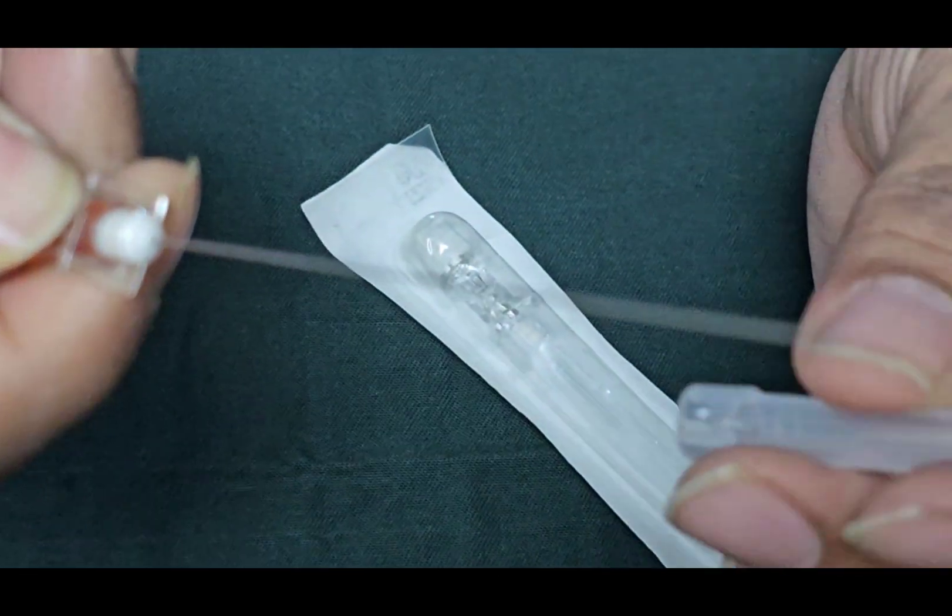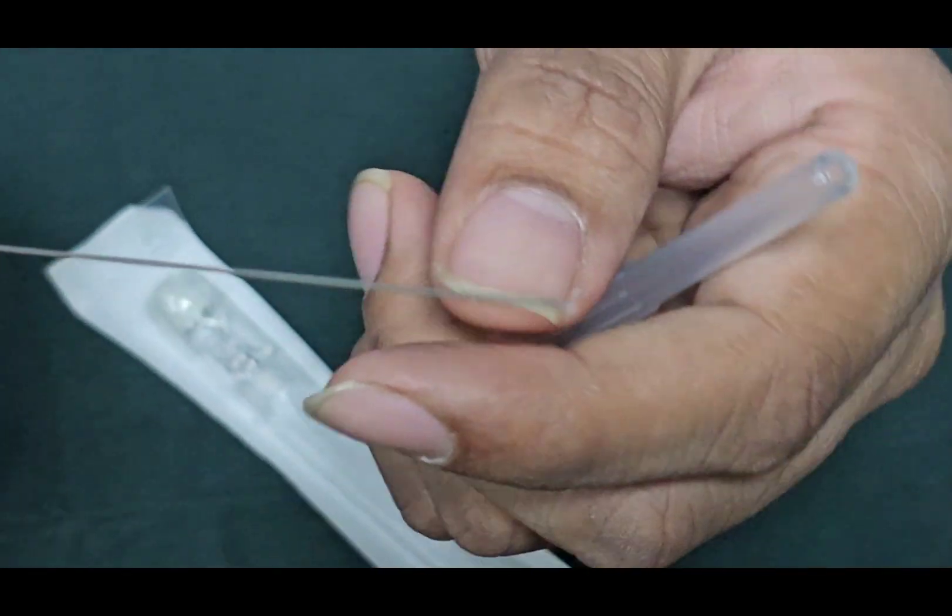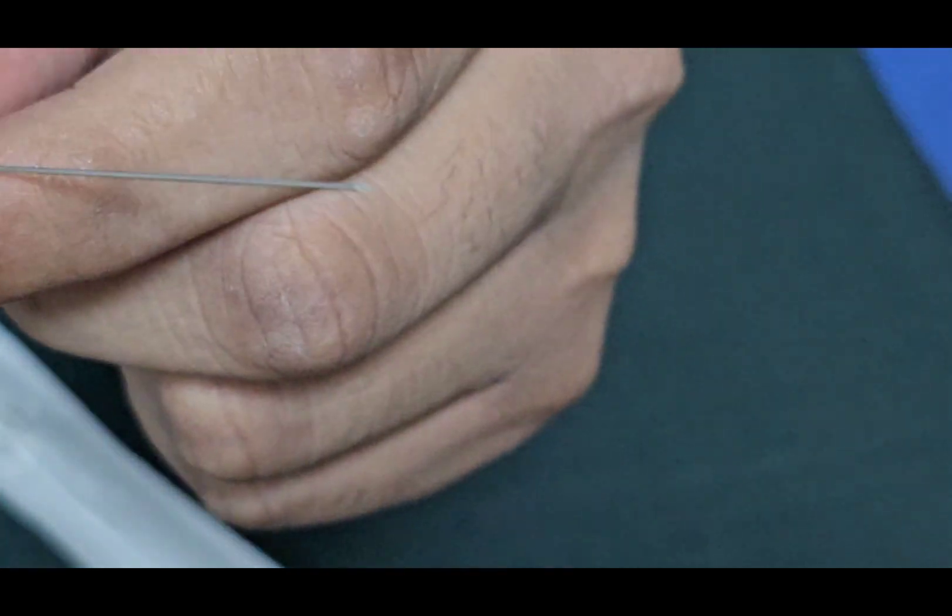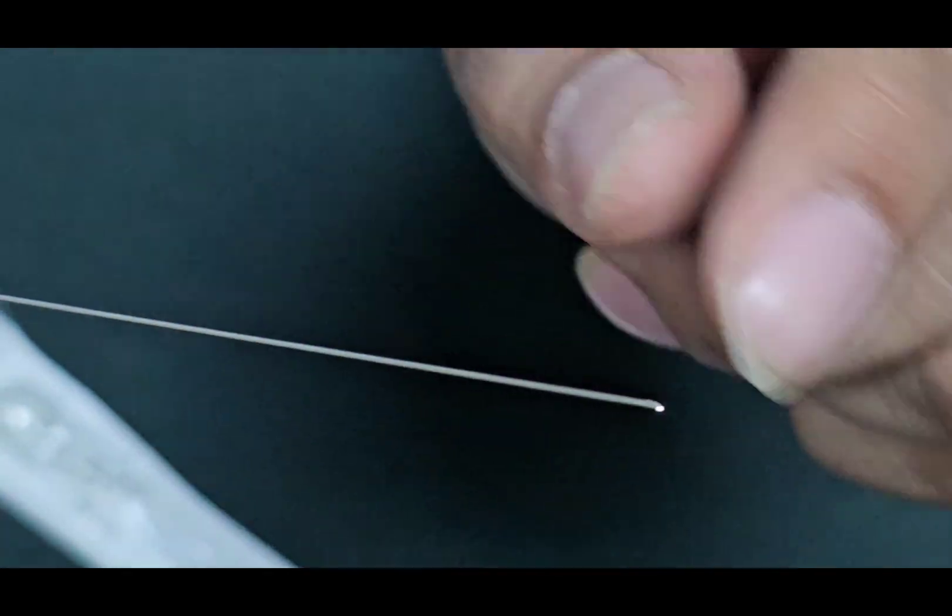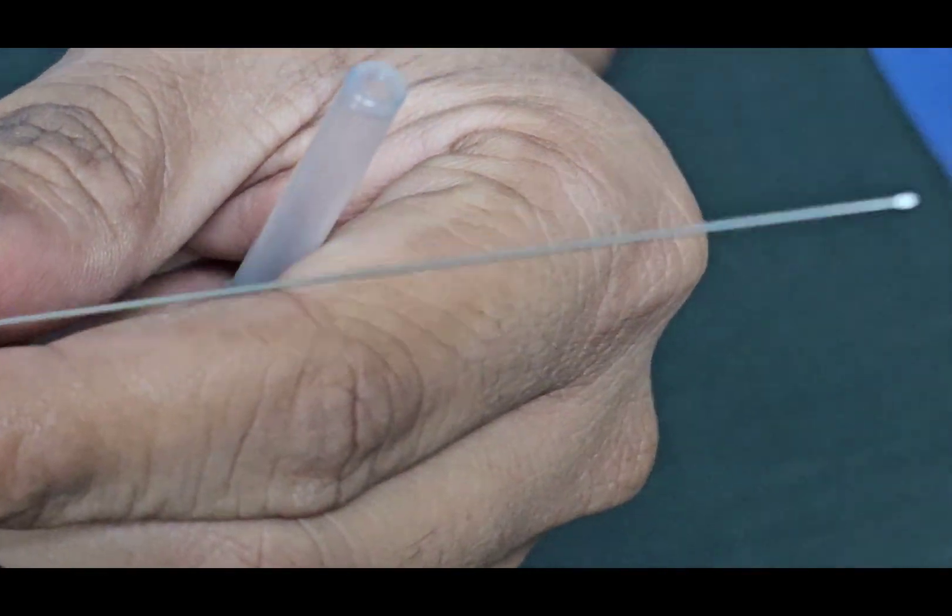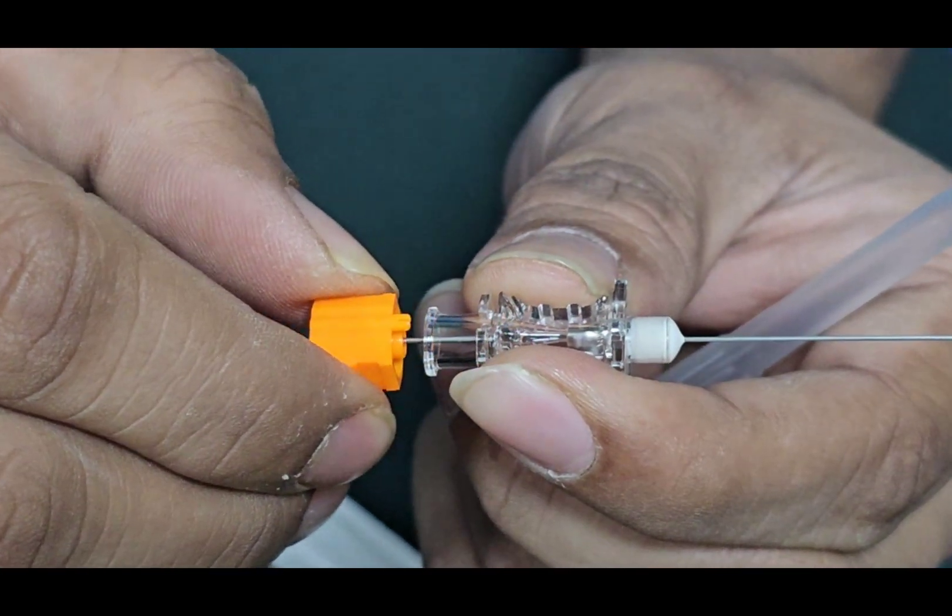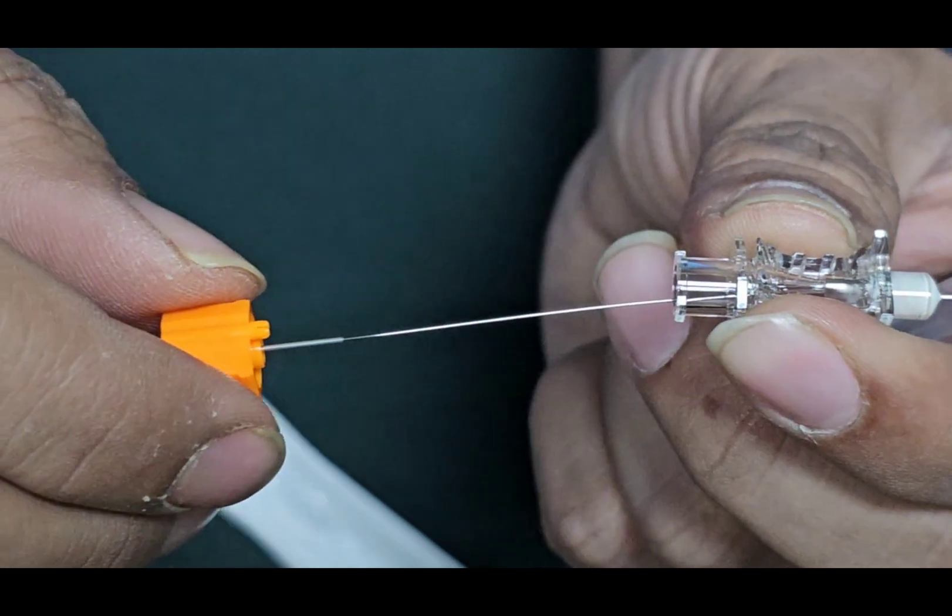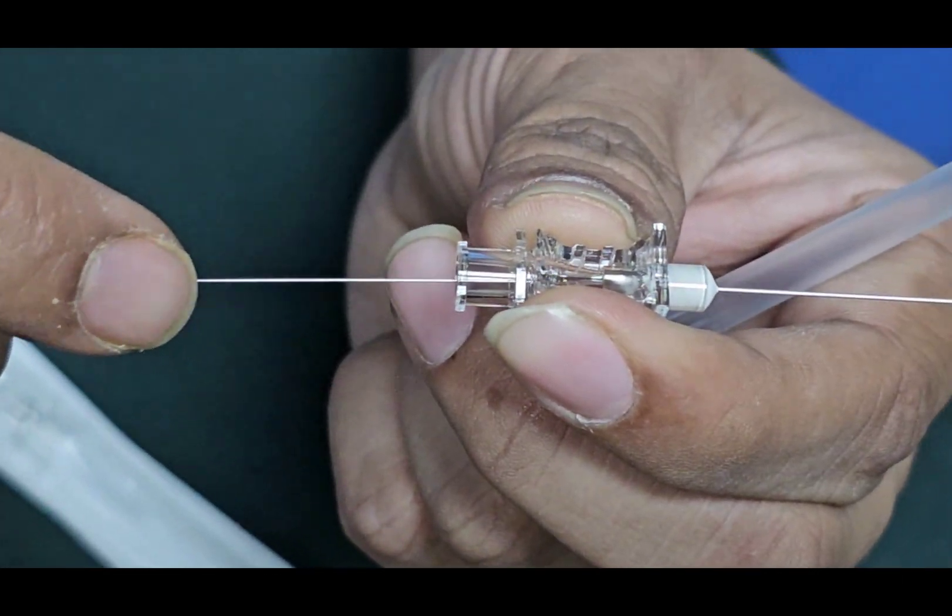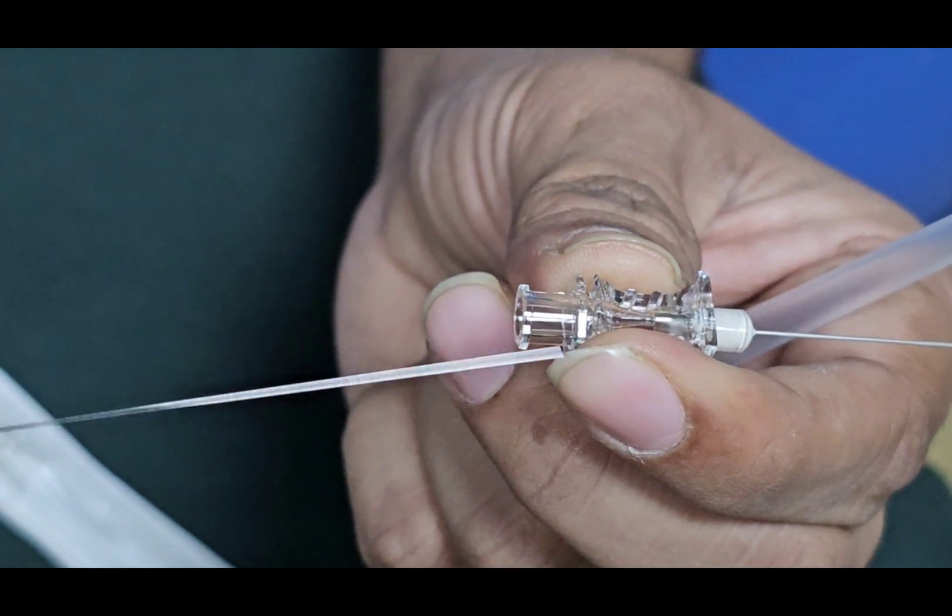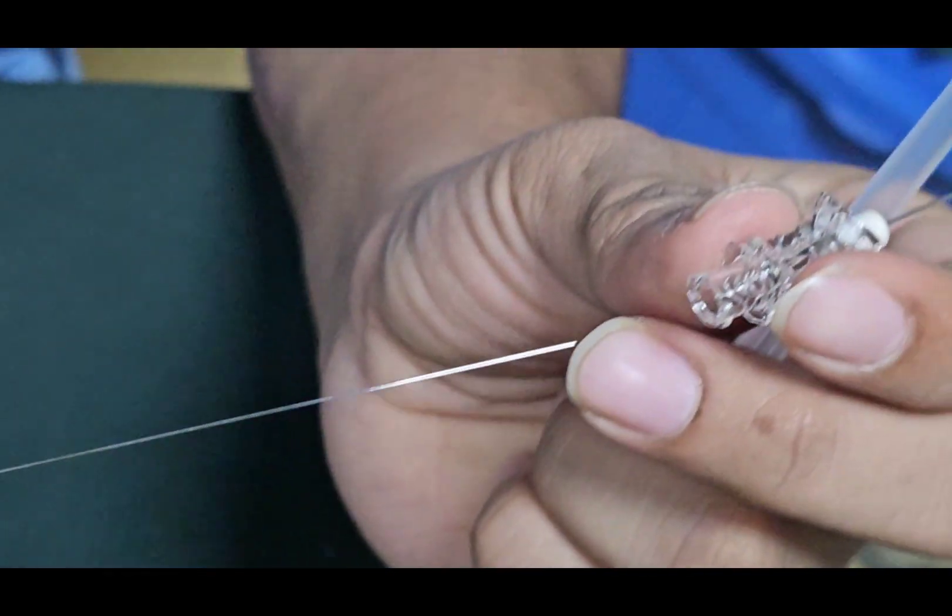This is the spinal needle and this is its cap. We can remove the cap. And we are seeing that there is a tip which is very sharp and beveled. And this is the hub. And we can open the hub from the behind. And we can see there is a stylet which is metallic, which is a metallic component.